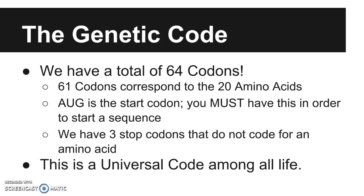AUG is always the start codon and you must have this in order to start a sequence. If you do not have AUG, you will not start reading the sequence. If AUG is never in that sequence, you do not start reading. We also have three stop codons that do not code for amino acids, but signal that we're done — we've made our protein. These codes are for all life, whether it is bacteria, human, protist, or a tree. All cells in life use this genetic code.